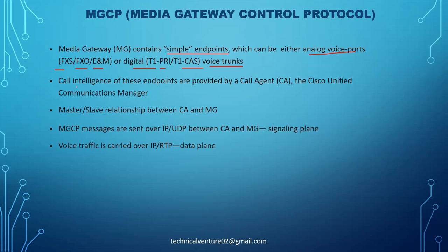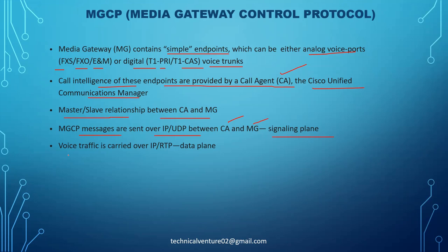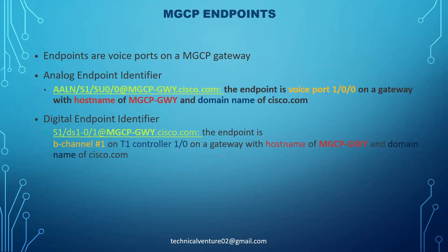The call intelligence of these endpoints is provided by CallManager, that is your CUCM — the Cisco Unified Communications Manager. It's a master-slave relationship between the CallManager and the media gateway. MGCP messages are sent over IP UDP between CallManager and the media gateway on the signaling plane, and voice traffic is carried over IP RTP on the data plane.